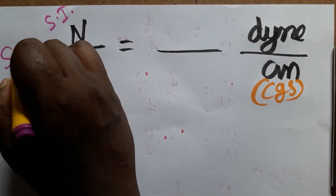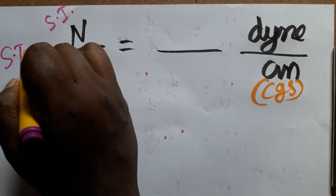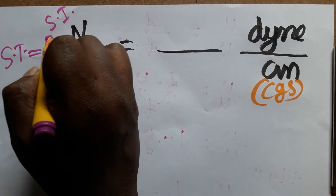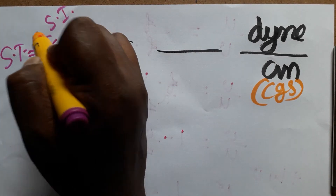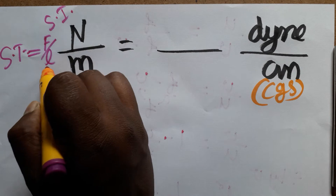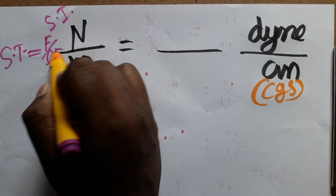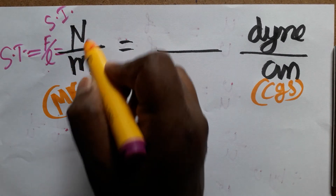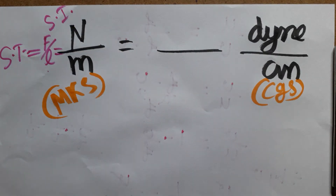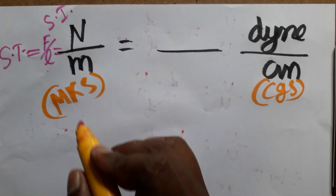Surface tension is equal to force per unit length. The force unit is newton and the length unit is meter. We are going to convert this same unit into the CGS system.